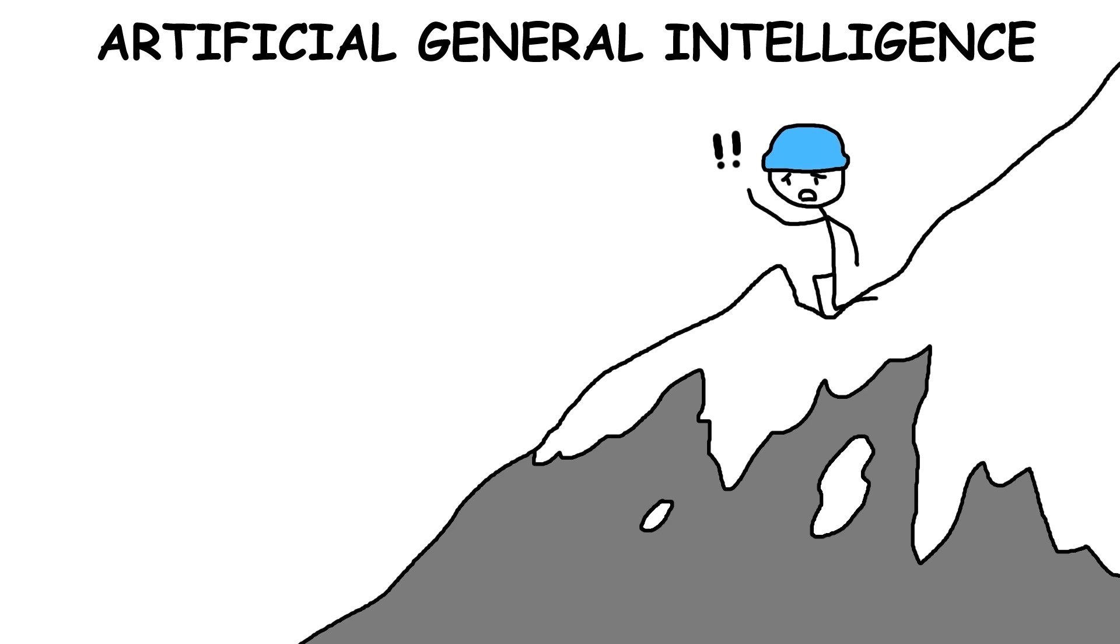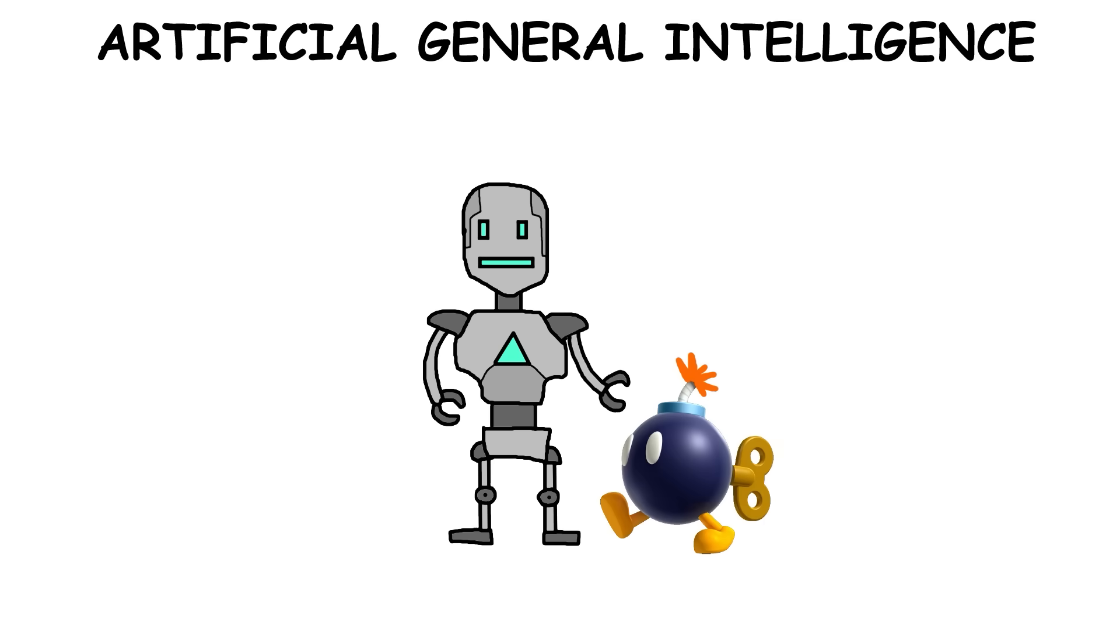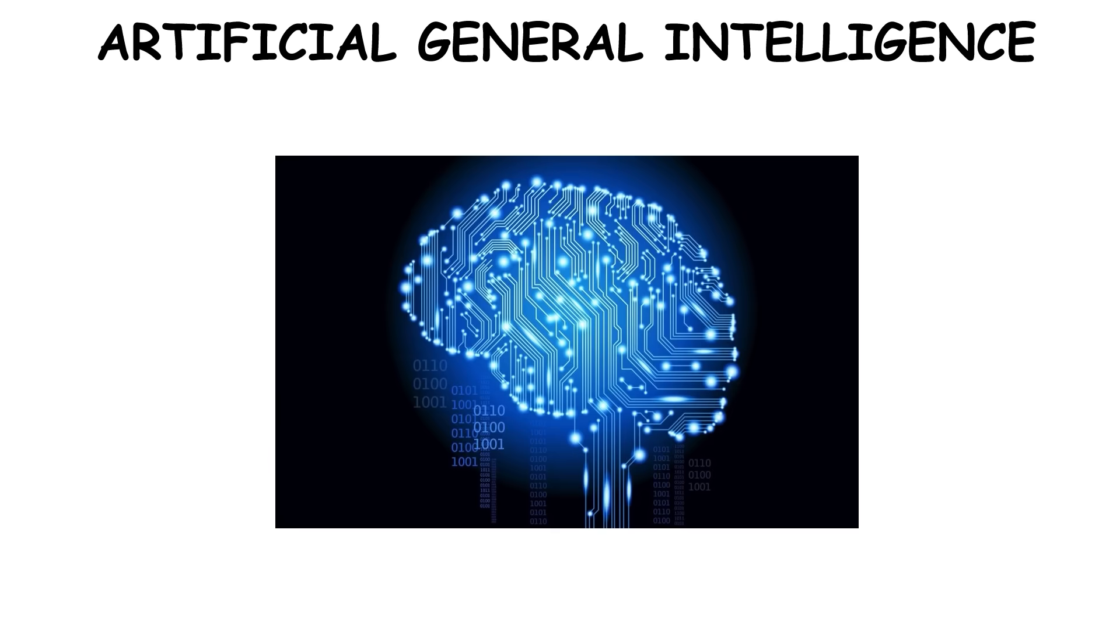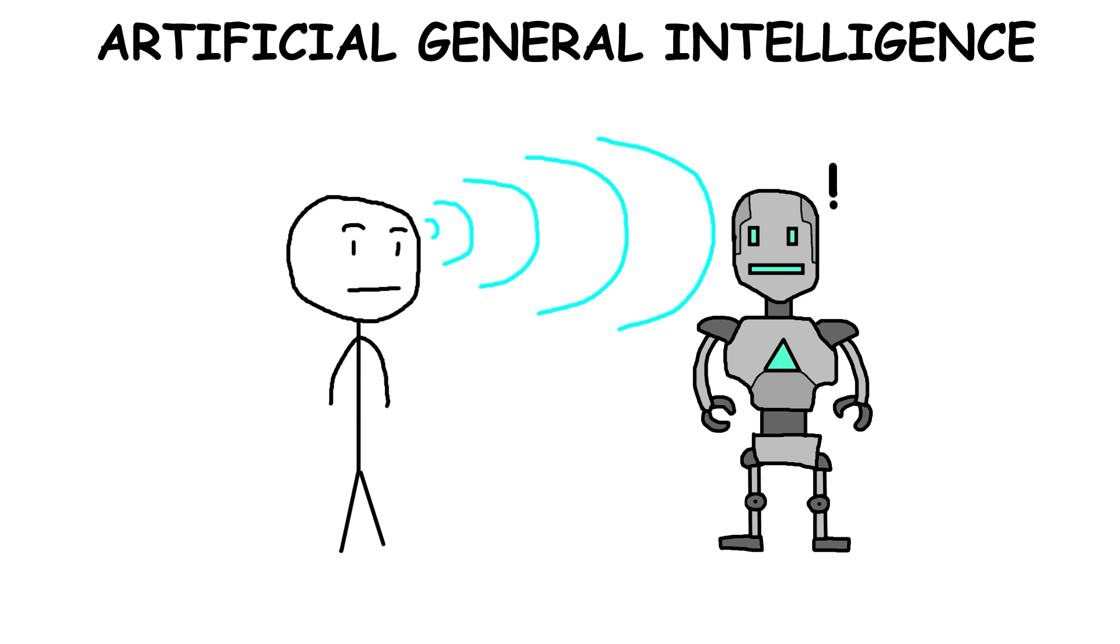In emergencies, AGI robots could take on risky rescue missions, perform precise surgeries, or diffuse bombs without putting humans in danger. With advanced brain-computer technology like Neuralink, we might even communicate directly with AGI through our thoughts.